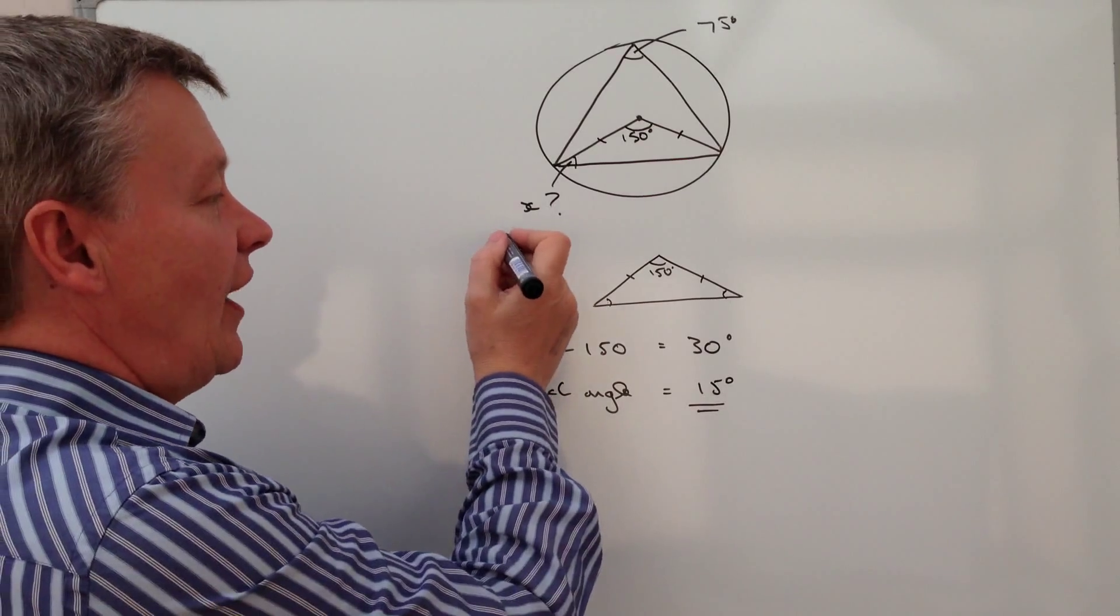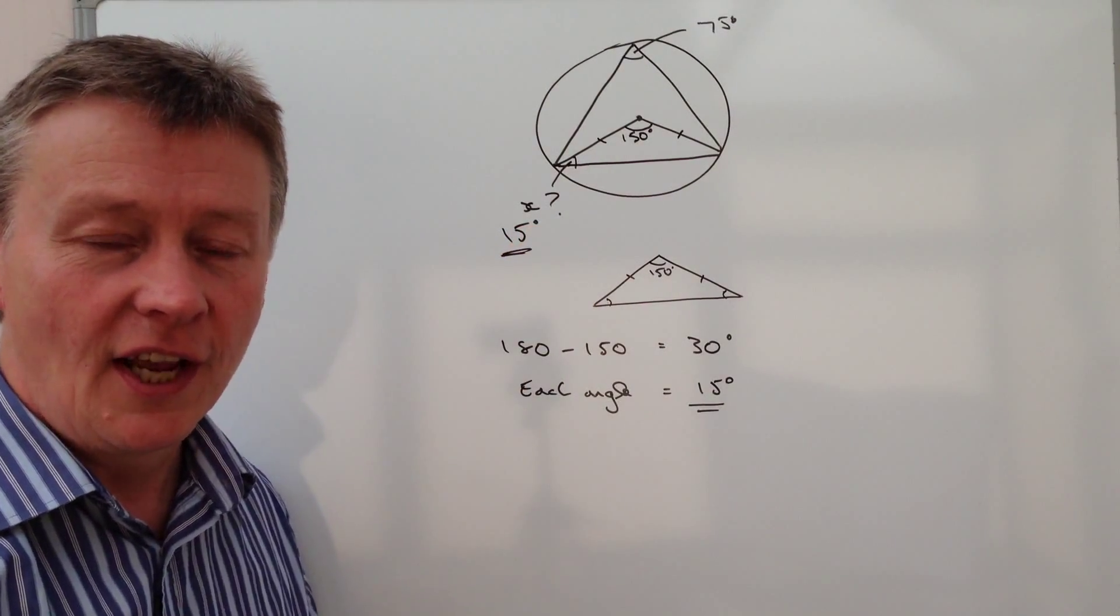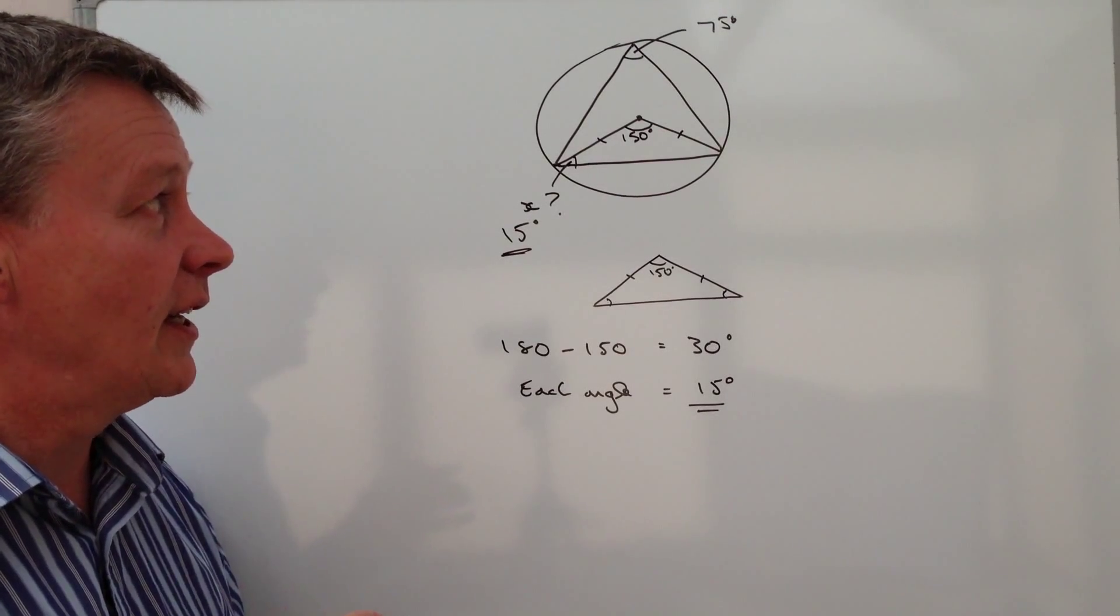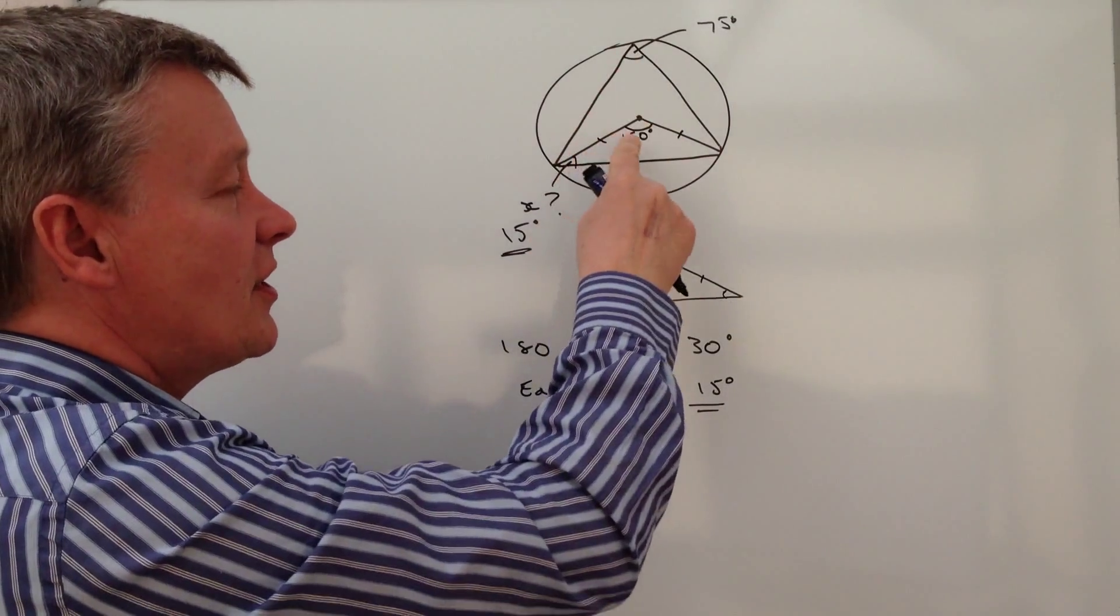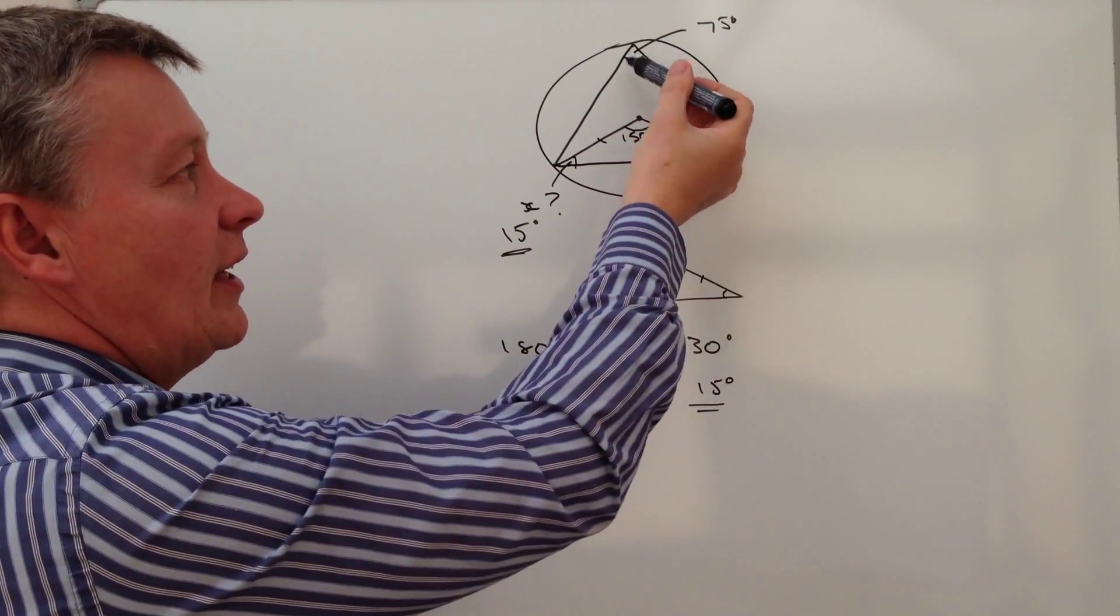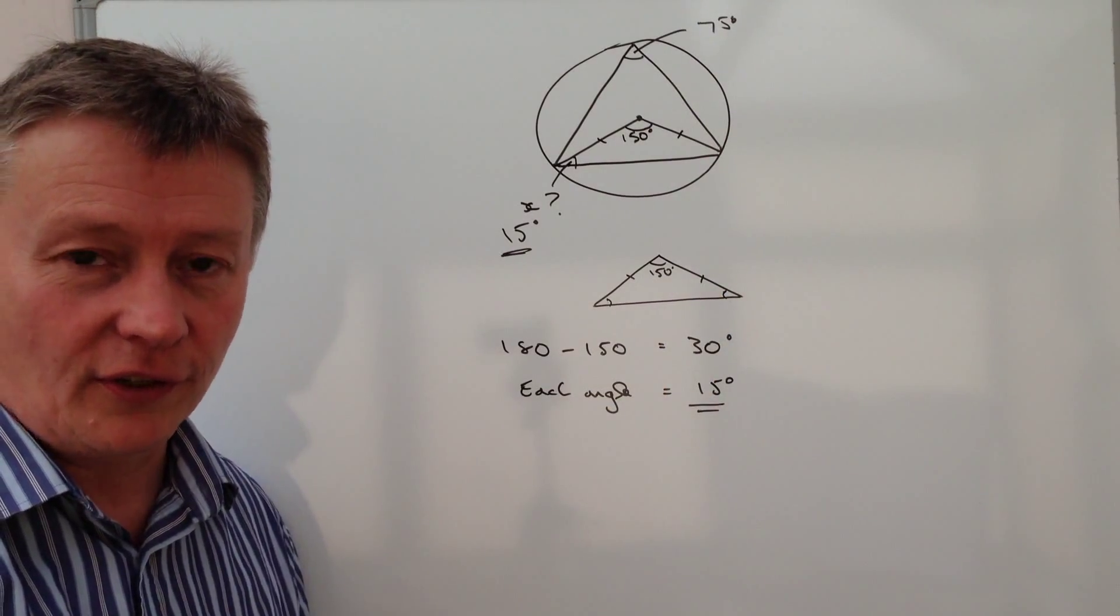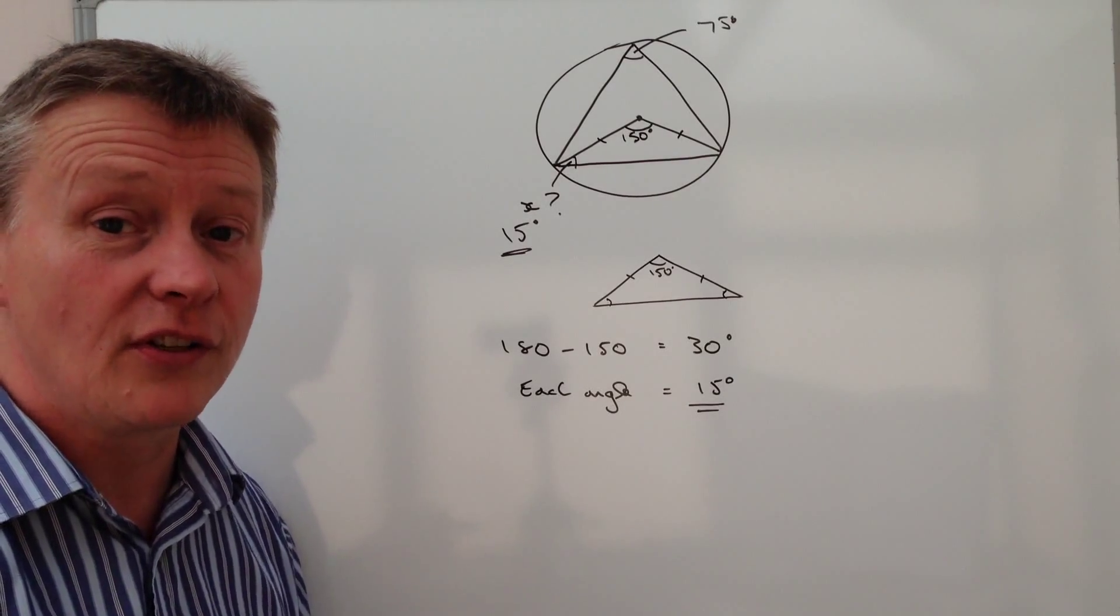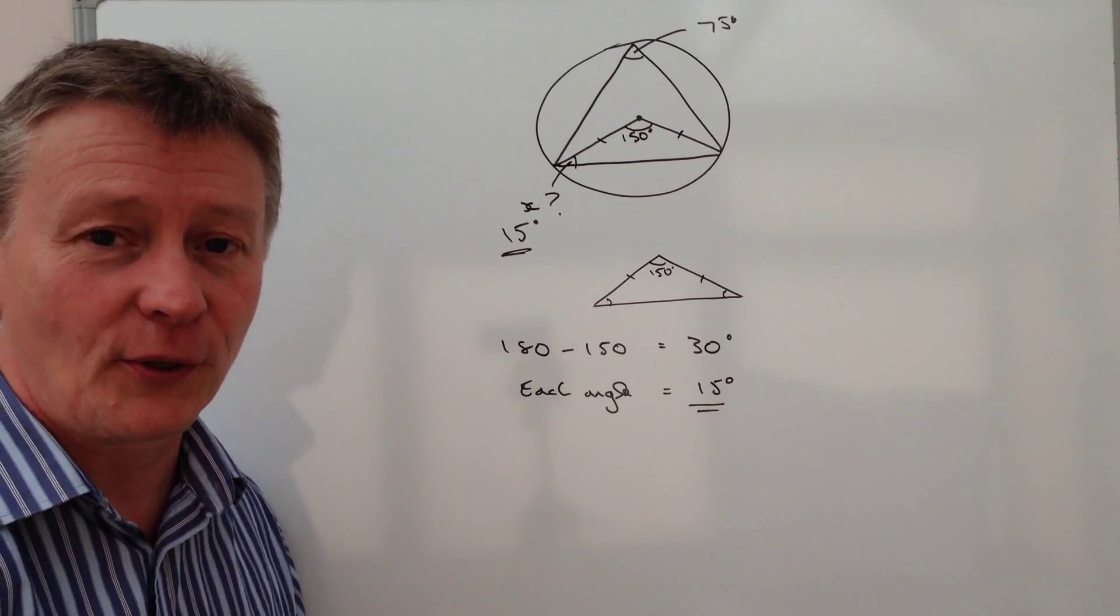And actually that would answer the question that the value of X is 15 degrees. So what we've done in this particular question, which is A grade, is we've used two things that we know. The first thing is this bit in the middle, where it's double the angle at the outside, and also the fact it's an isosceles triangle. So sometimes with circle theorems, you get these kind of questions where you need to just use a couple of different skills in order to be able to answer the question.